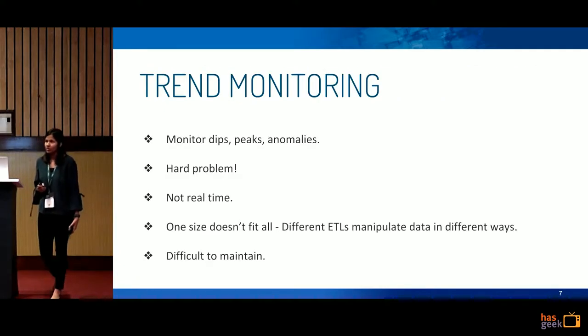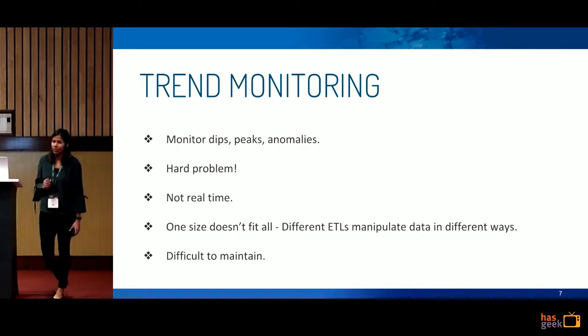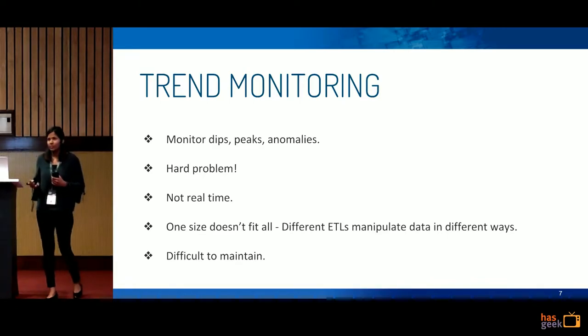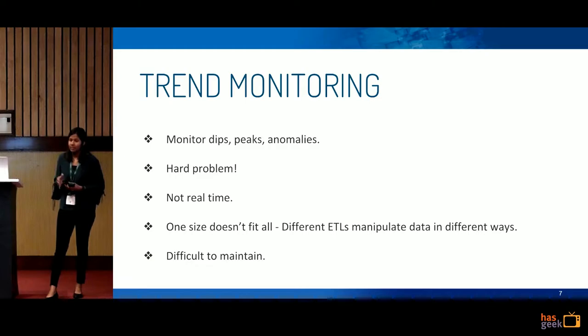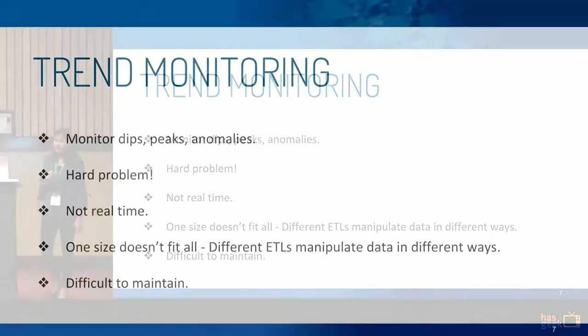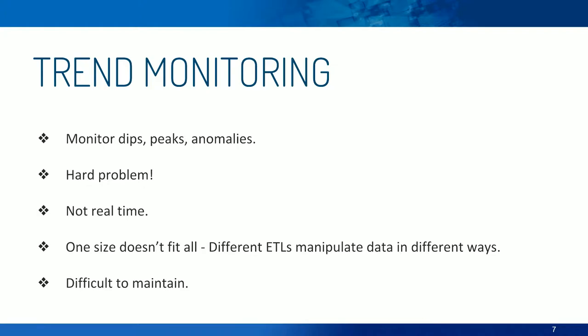This was our first attempt at solving the problem of data quality: trend monitoring. The idea is that we would monitor data and alert in case we see any anomalies, like suddenly receiving a burst of data or no data for a particular day. But we soon concluded that it's a hard problem. First of all, it's not real time — these trends can only be monitored once the ETL has finished and once we have the data. We cannot stop the pipeline if something is wrong.